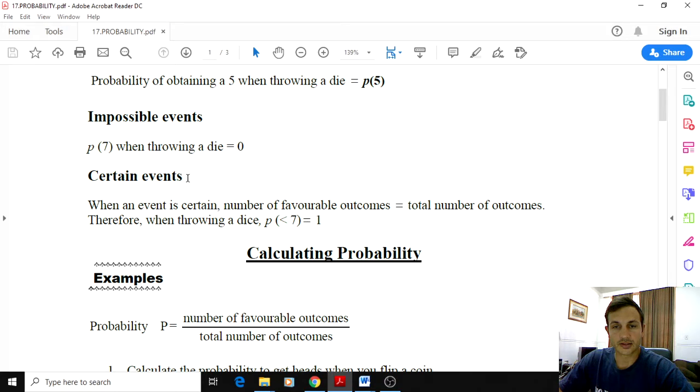Certain events are events that are definitely going to happen. In other words, you've got a 100% chance of something happening. So what is the probability, for example, of you throwing a number less than 7 when you throw a die? That's going to be a 100% chance because all the numbers on the die are less than 7, 1 to 6. Okay, so probability of the values being less than 7 equals 1.